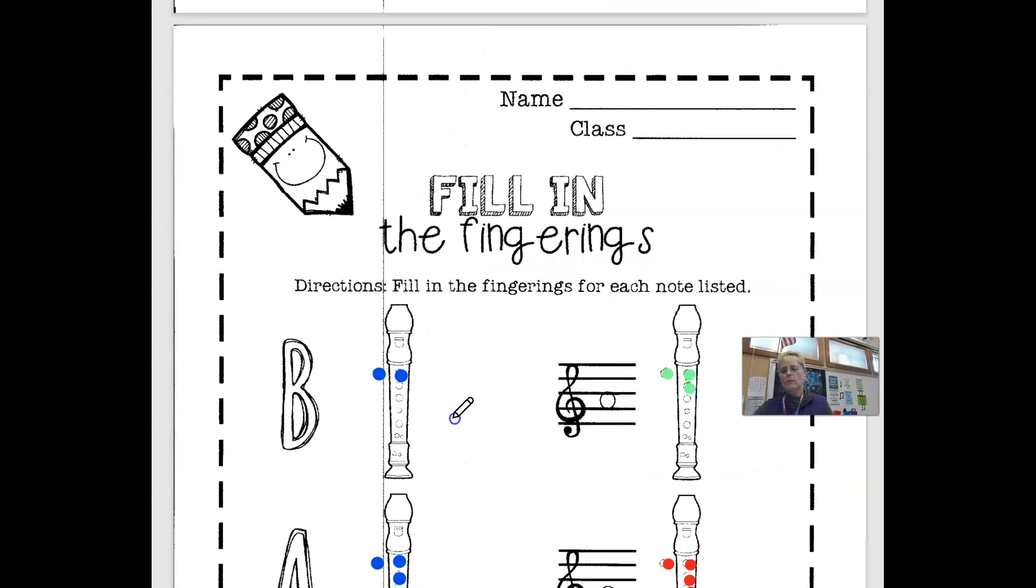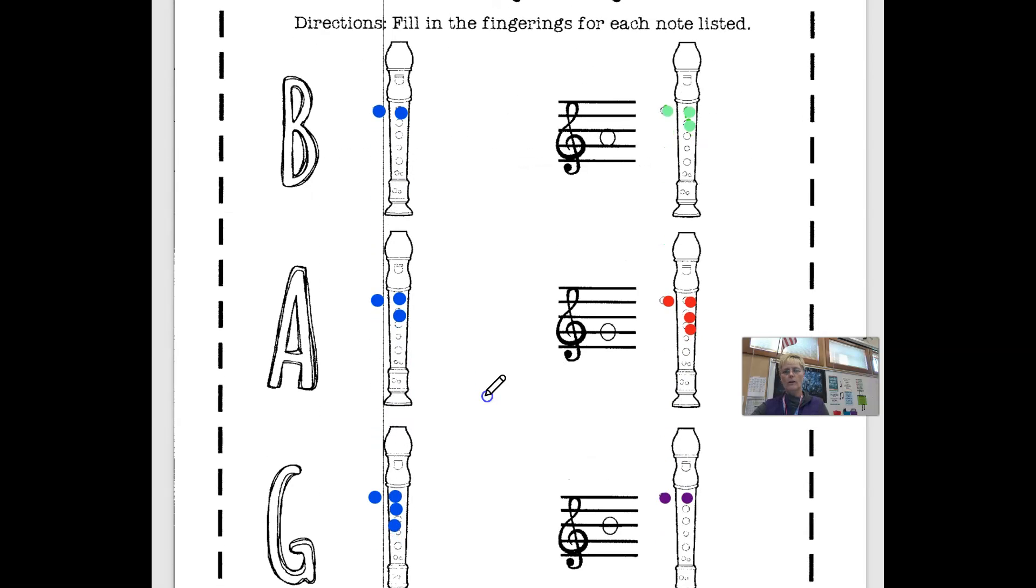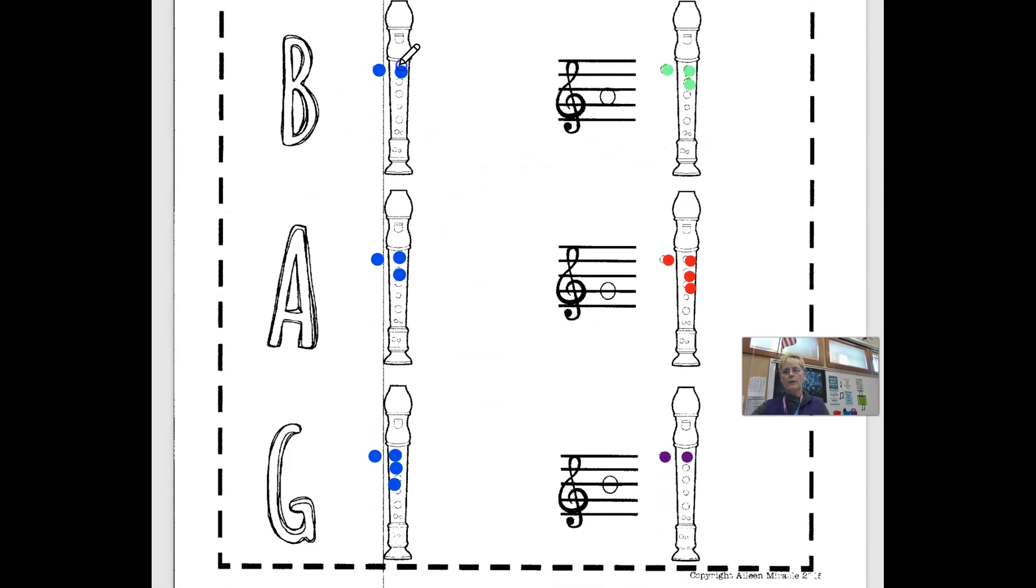Okay, and on the bottom one, you're actually going to put down the fingerings. So here they are again. A B is this, the thumb and the first finger. A is the thumb, first and second finger. And a G is the thumb, first, second, and third finger.